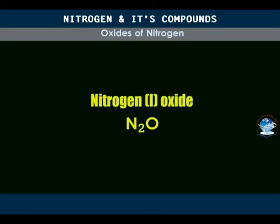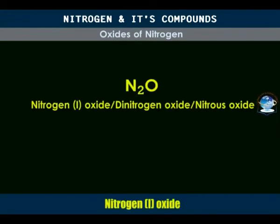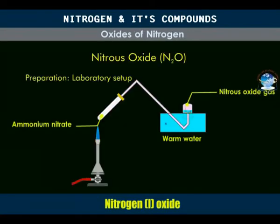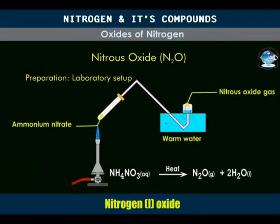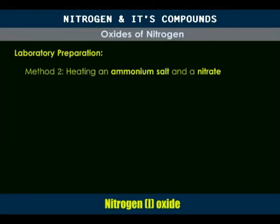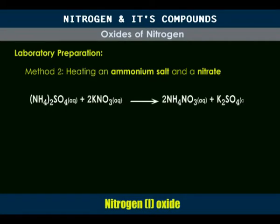Nitrogen-1 oxide, commonly called dinitrogen oxide or nitrous oxide, is prepared by gently heating ammonium nitrate. The reaction is exothermic and may become explosive if heated strongly. As a precaution, heating is discontinued after about two-thirds of the solid has decomposed. The gas is collected over warm water, in which it is only slightly soluble. It can also be prepared by heating a mixture of any ammonium salt and a nitrate that will yield ammonium nitrate — for example, ammonium sulfate and potassium nitrate — which is safer with less likelihood of explosion.